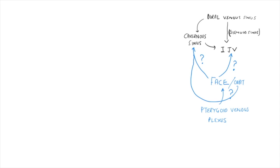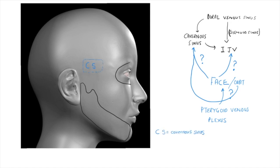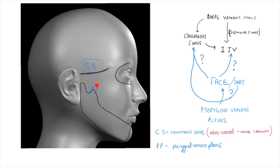Let's first look at this on a very basic schematic, then apply it to a more anatomically accurate image. Here we see the view from the right side of the head. I'll add in the mandible and the bony orbit for orientation. I'll add the cavernous sinus drawn in hatched lines to denote it's intracranial, and the base of the skull. We'll also add the location of the pterygoid venous plexus — found in a space known as the infratemporal fossa, deep to the ramus of the mandible.